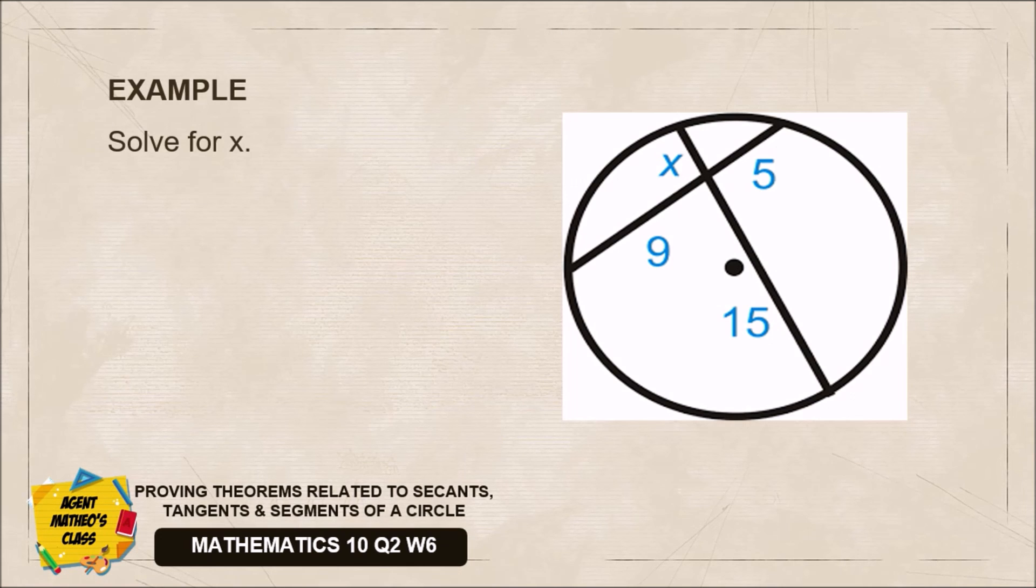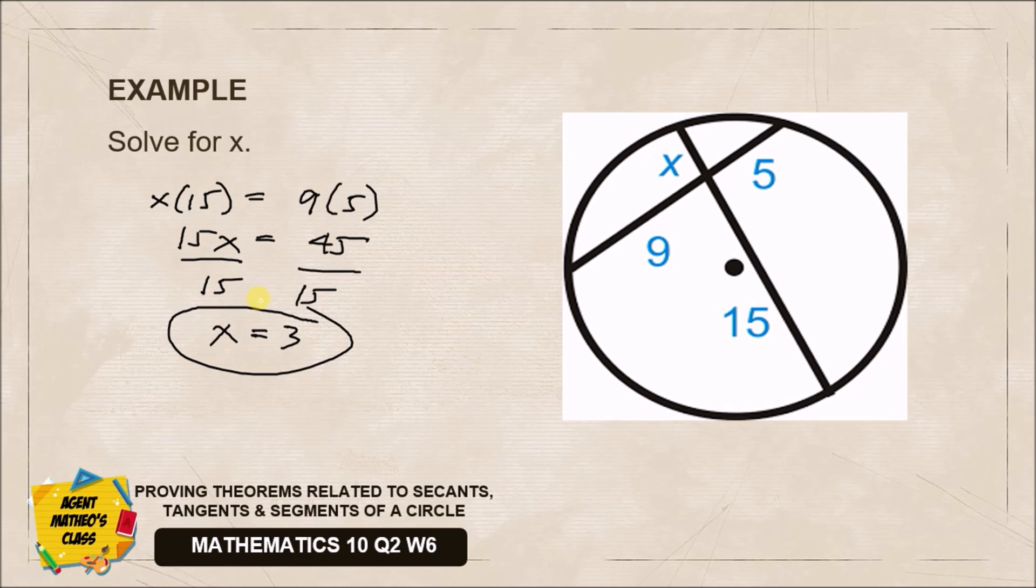By this example, applying our theorem, we could say that the product of x and 15 is equal to the product of 9 and 5. So we multiply: 15x = 45. Dividing both sides by 15, you have x equals 3. And that is our first theorem proven with an example.